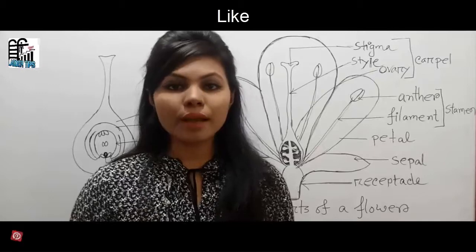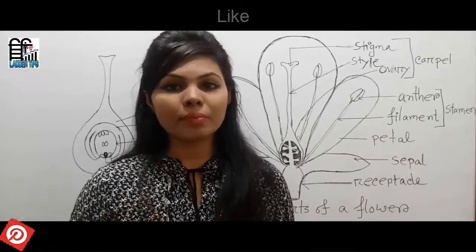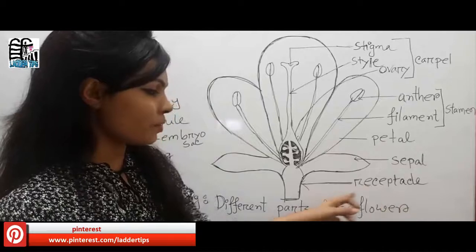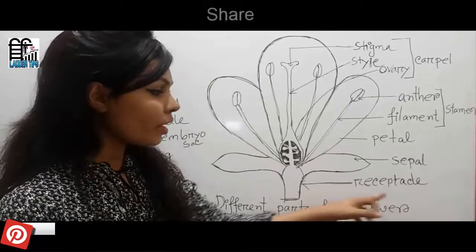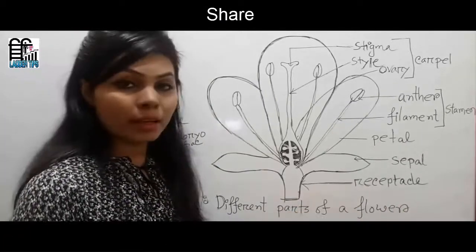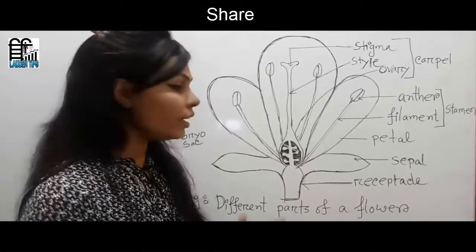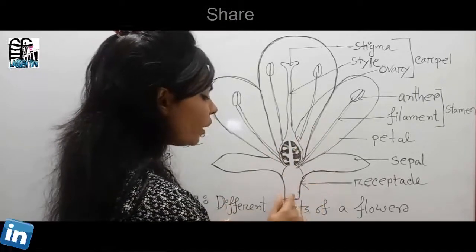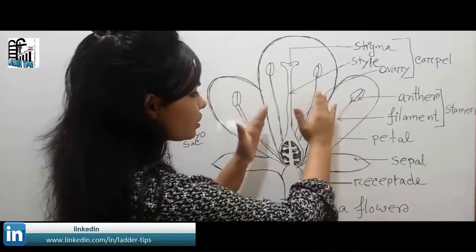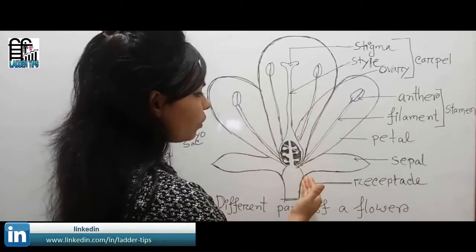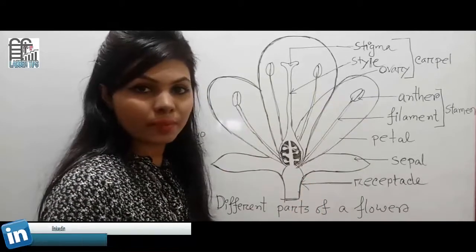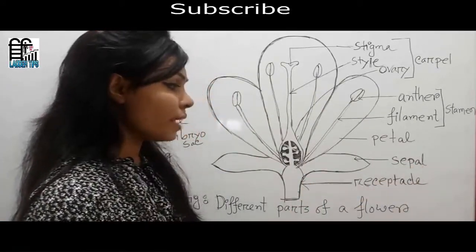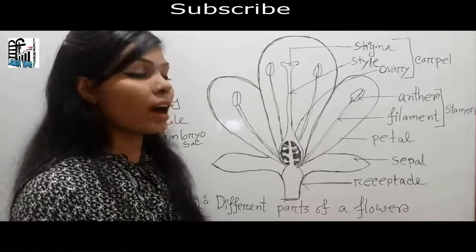we must know about the different parts of a flower. Let us see — receptacle. The receptacle, or thalamus, is a part of the flower stalk to which the floral parts of a flower are attached.